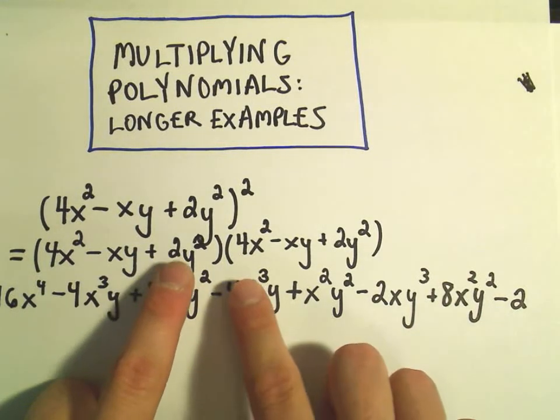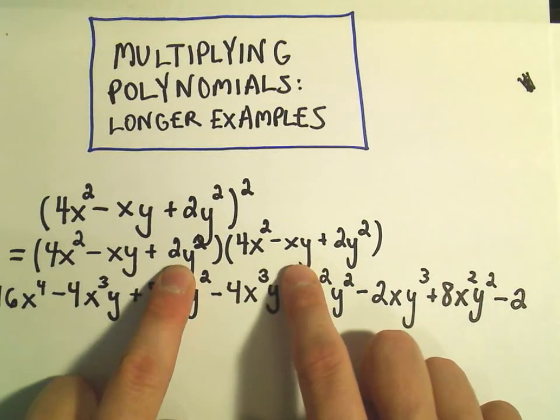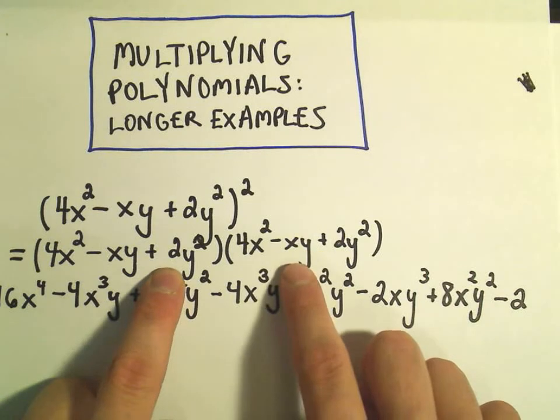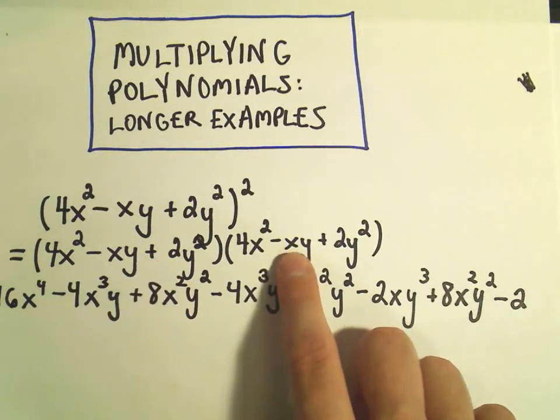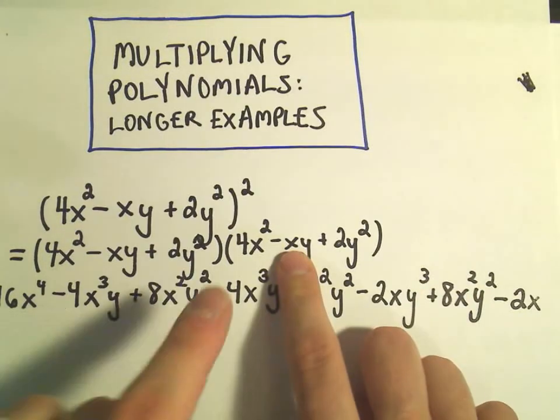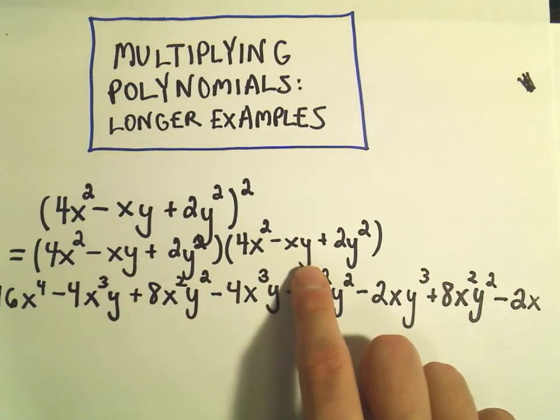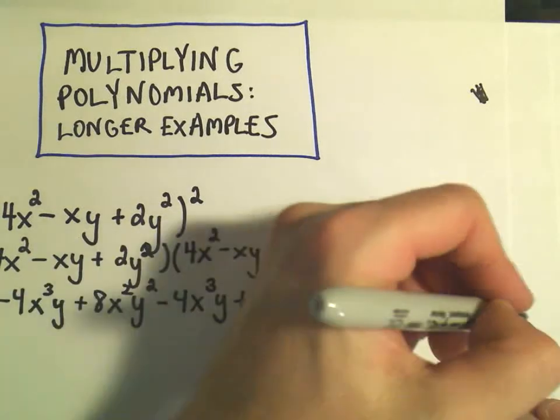So we had positive 2y² times negative xy. So positive 2 and negative 1 will give us the negative 2. The x will stick on there. And then we have y² times y to the first, which is going to be a y to the third power.